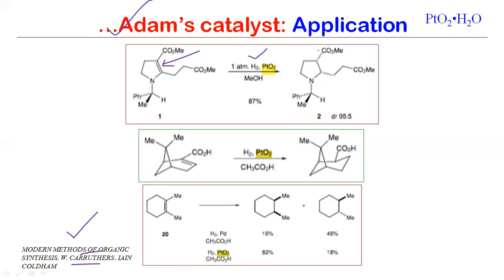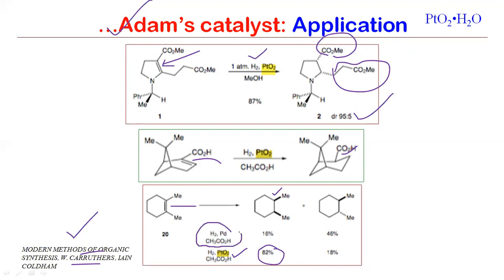When we have a double bond and use Adam's catalyst, we get almost 82 percent of the compound where hydrogenation takes place in cis fashion. Under ordinary hydrogenation conditions using palladium, only about 16 and 46 percent of the products form with lower yield and more byproducts. So the important aspect of Adam's catalyst is that we can get almost exclusively cis-alkylated products — that is a key advantage.